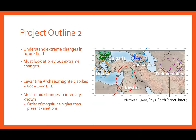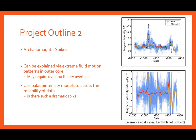The second part of the project moves on to using paleointensity models to better understand extreme changes in the geomagnetic field. A recent extreme change will be used as a case study: the Levantine Iron Age anomaly, which occurred between 800 and 1000 BCE. This example is the most rapid change in intensity known and consists of two sudden spikes an order of magnitude higher than the variation seen in the present field. The spike has been found across the Levant region including Israel in the south, Georgia in the north, and Turkmenistan in the east. The geomagnetic high is not seen in the Balkans, marking the western limit of the anomaly.